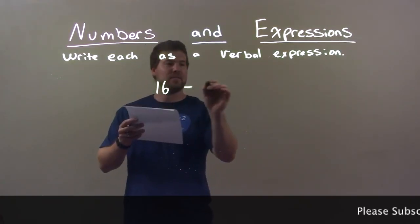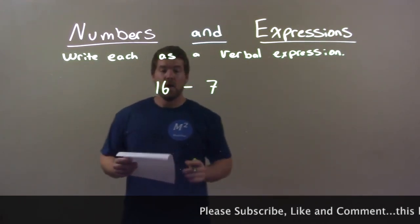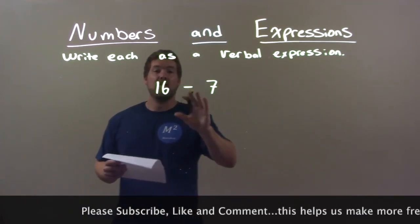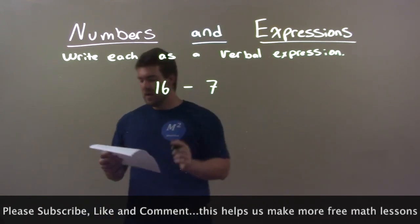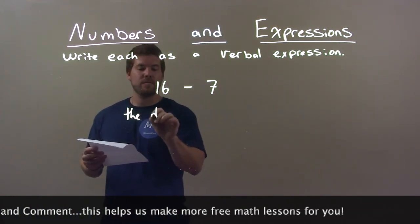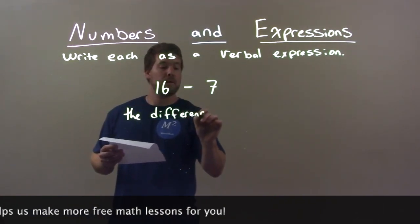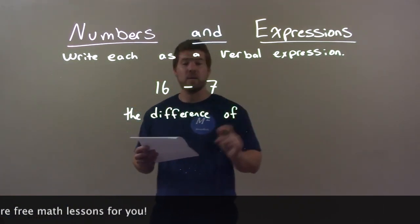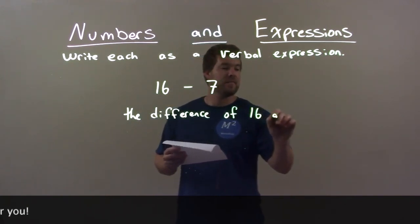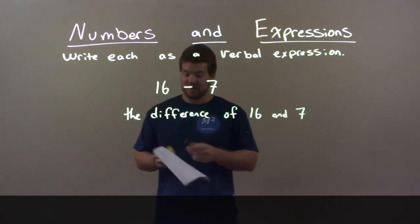16 minus 7. The way we see subtraction, we can write it as the difference of two numbers. So we can write this one as the difference of — the difference of — and our two numbers: 16 and 7. And there we have it, our final answer.